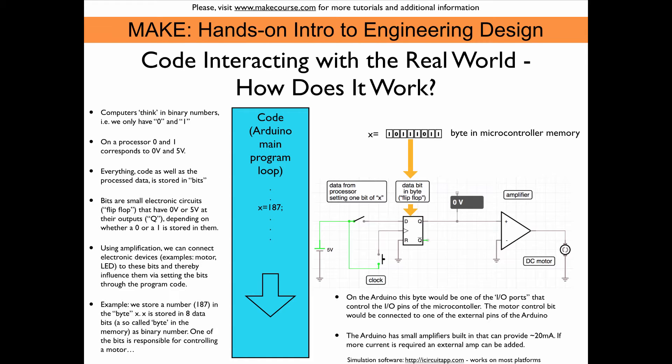Somehow we need to close the loop between that programming code and actually sending current through a motor or a LED. So I try to show this here on this schematic. Computers think in binary numbers. You all know that. We have zeros and ones. And so on a microcontroller or pretty much any processor, this corresponds to zero volts and a non-zero voltage. On the Arduino it's five volts.